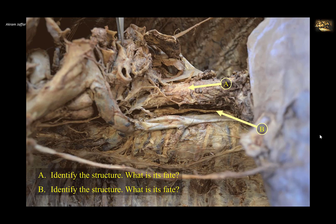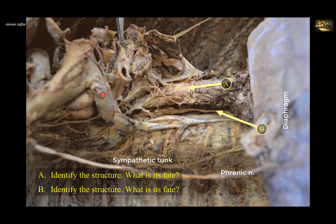Identify the structures A and B — what is the fate of each? This is a dissection of the posterior mediastinum looked at from the right side. To be oriented, note the diaphragm on the right side, so this is the inferior aspect. You can see the phrenic nerve connected to the diaphragm coming from the neck. Also, you can see here the sympathetic trunk on the side of the vertebral column.